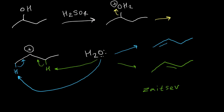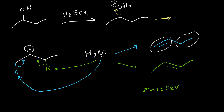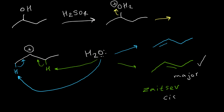So we have two different types of products. If we have more than one product, the Zaitsev rule can predict the major product. The Zaitsev rule says the more stable alkene is going to be the major product. This alkene has two alkyl groups on the double bond and the other has only one alkyl group. Alkenes with more substituents are more stable, so this alkene is the major product. We also need to keep in mind that this alkene can have cis and trans isomers, so in total we actually have three different products.